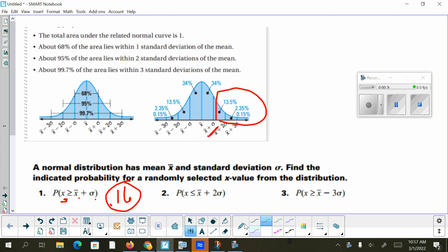For number two, let me erase my markings here. I want the probability of my x value being less than or equal to x̄ plus 2σ. That's two deviations above the average, which is here. If we want the probability of living below there, you can add up all those zones.